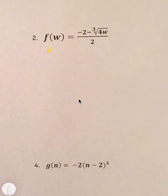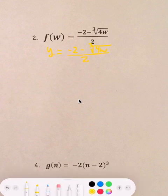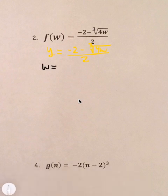Okay. First step. We just change f of w. I just change it to y equals and then it's negative 2 minus the cube root of 4w all of it divided by 2. That's step 1. Step 2. We'll go in reverse order this time. Switch the y and the w.